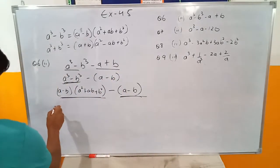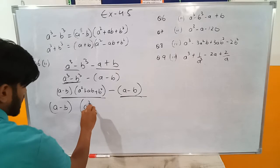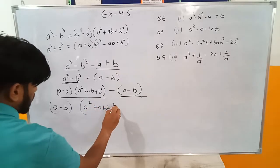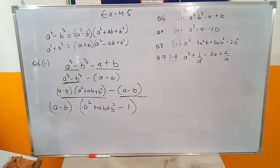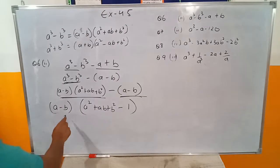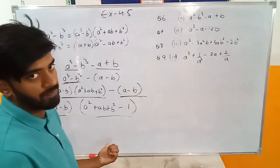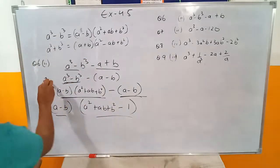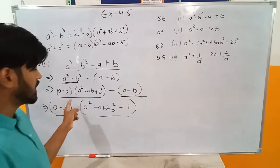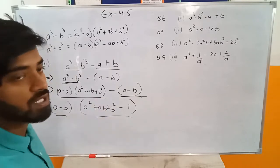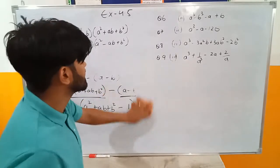Take out a minus b and keep it outside. What is left in the first part is a square plus ab plus b square, and in the second part nothing is left — so only one remains. The answer is a minus b, bracket a square plus ab plus b square minus one. This is now in product form — it is factorized.